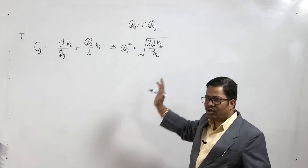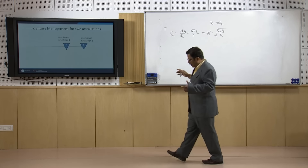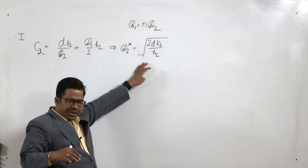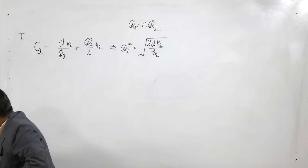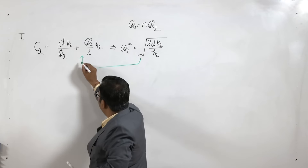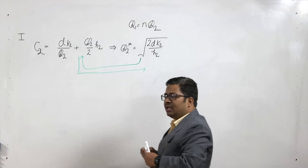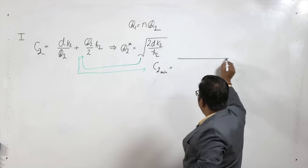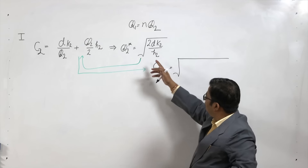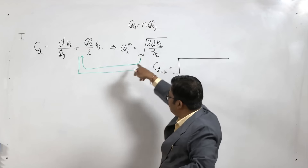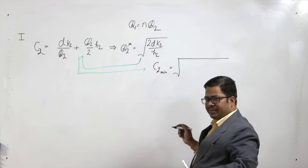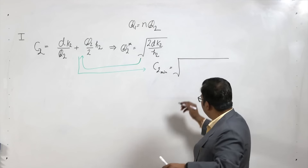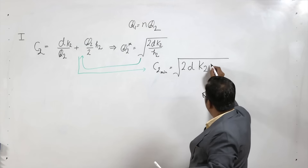This is the economic order quantity value we should have at installation 2. If we substitute this Q2 value back into the cost expression, C2 minimum results. I request all participants to substitute this value of Q2 into the equation and verify that C2 minimum equals the square root of 2DK2H2.